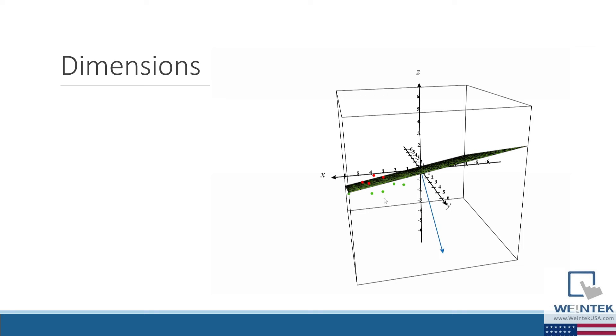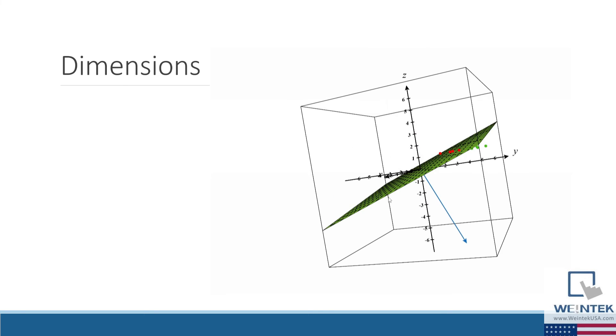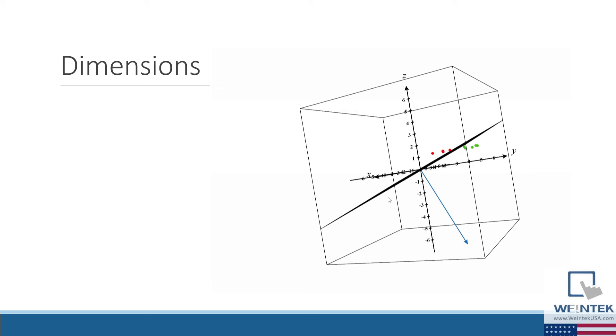And if I graph our weight vector, you'll notice that it points in the direction of the group that has an output value of true, or 1.